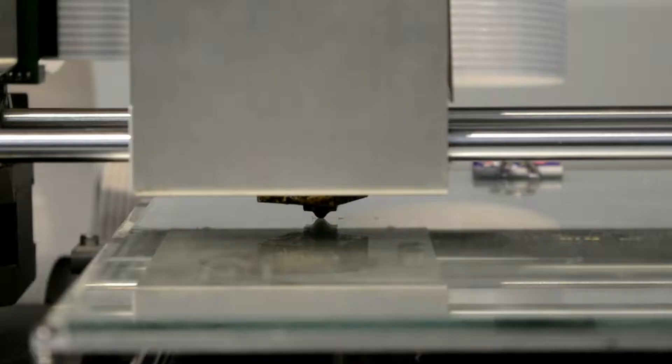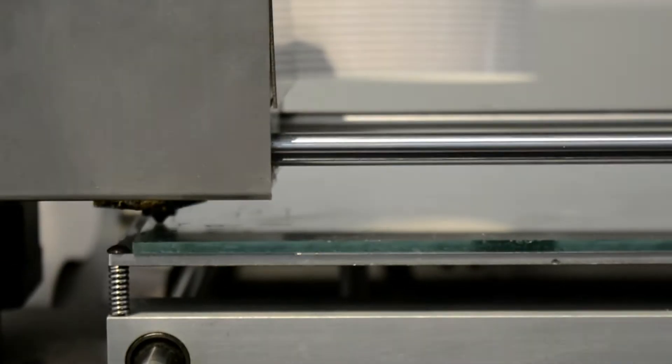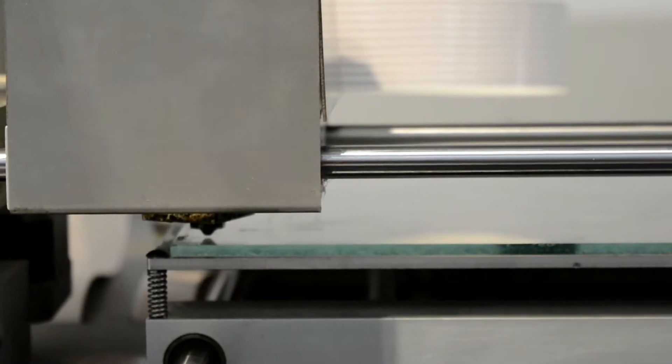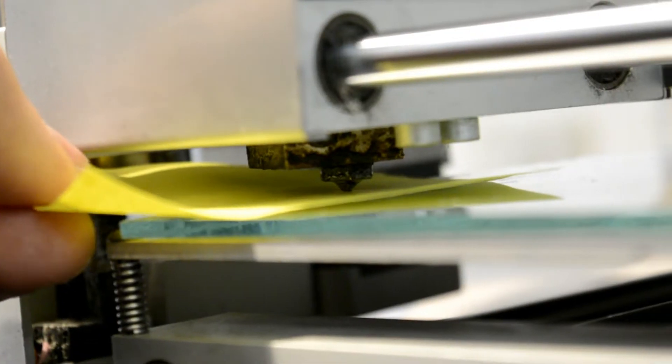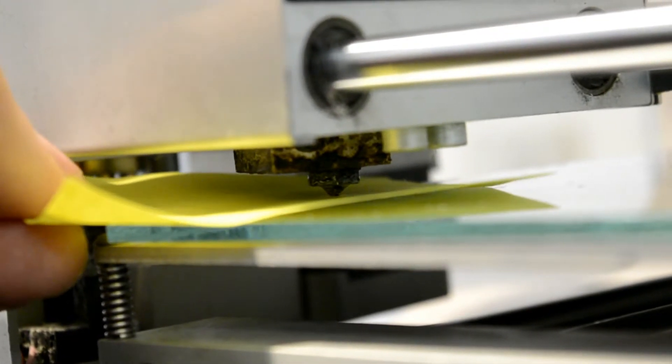The first very important thing is to get the first layer right. All you have to do is bring the nozzle to the screw, take a piece of paper and put it underneath the nozzle and gently turn the screw until there is a very slight resistance between the nozzle,